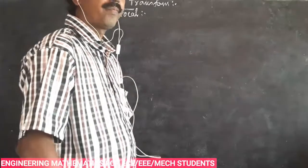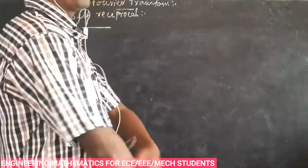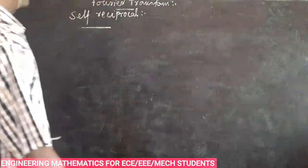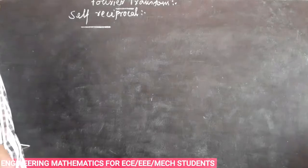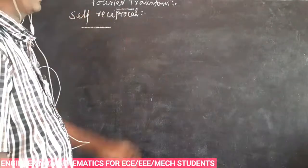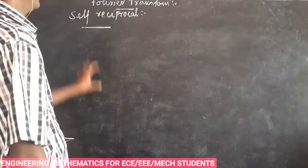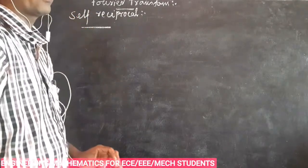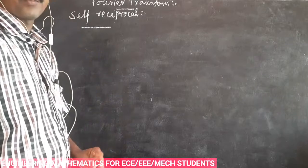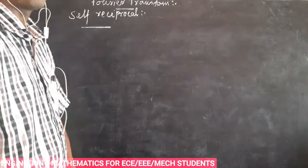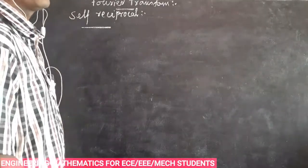Hello everyone. In this video, we will talk about self-reciprocal. Self-reciprocal is a definition, and we will prove that e power minus x squared by 2 is self-reciprocal.